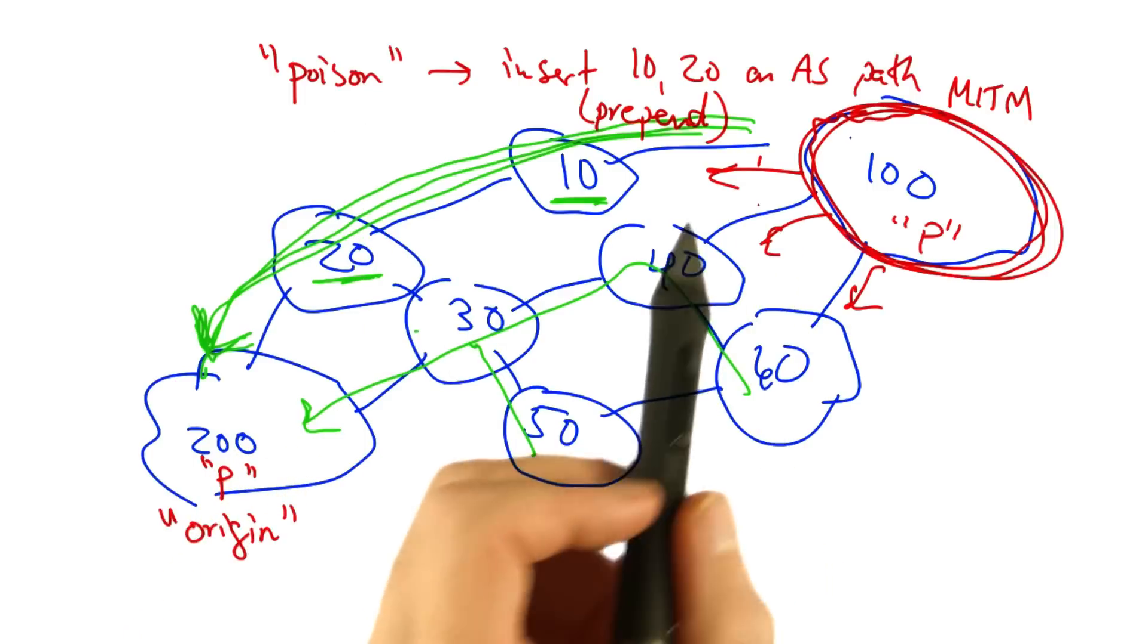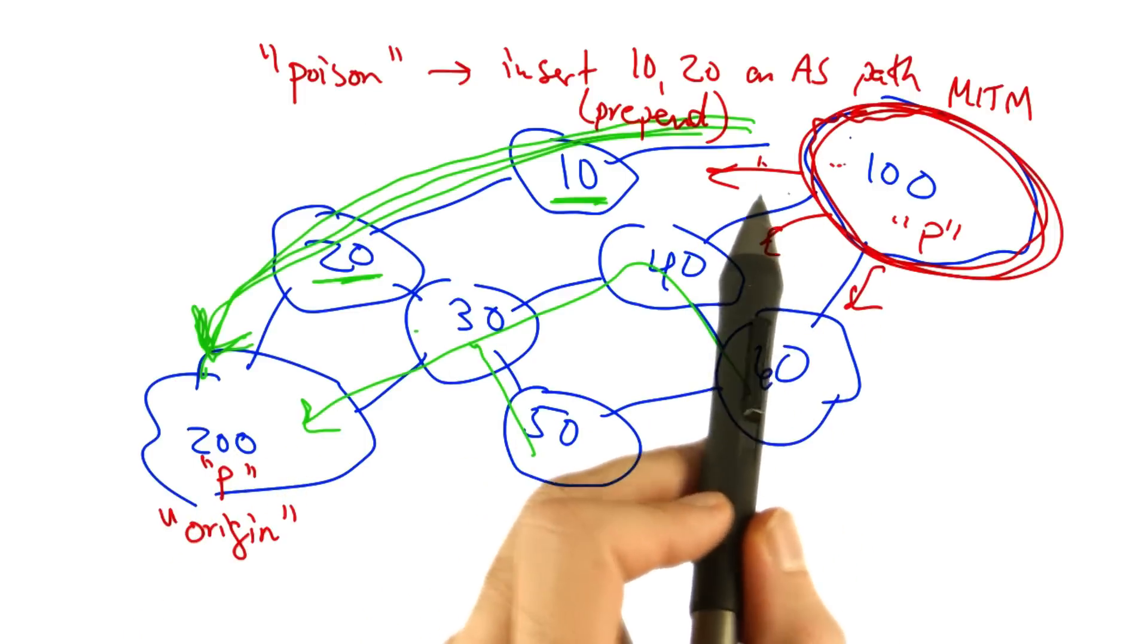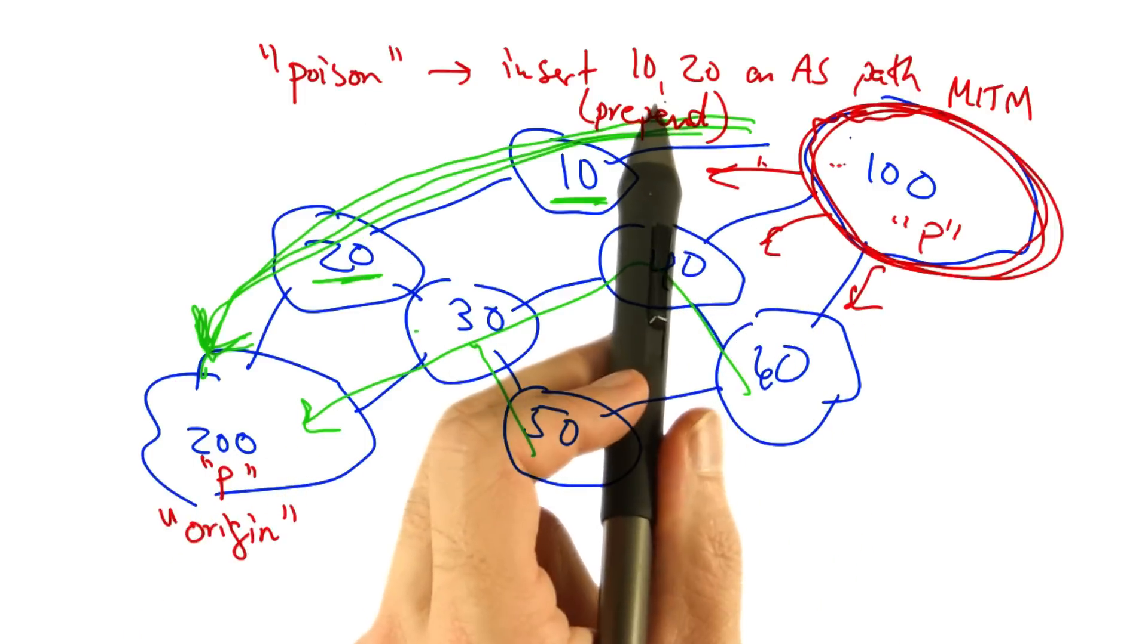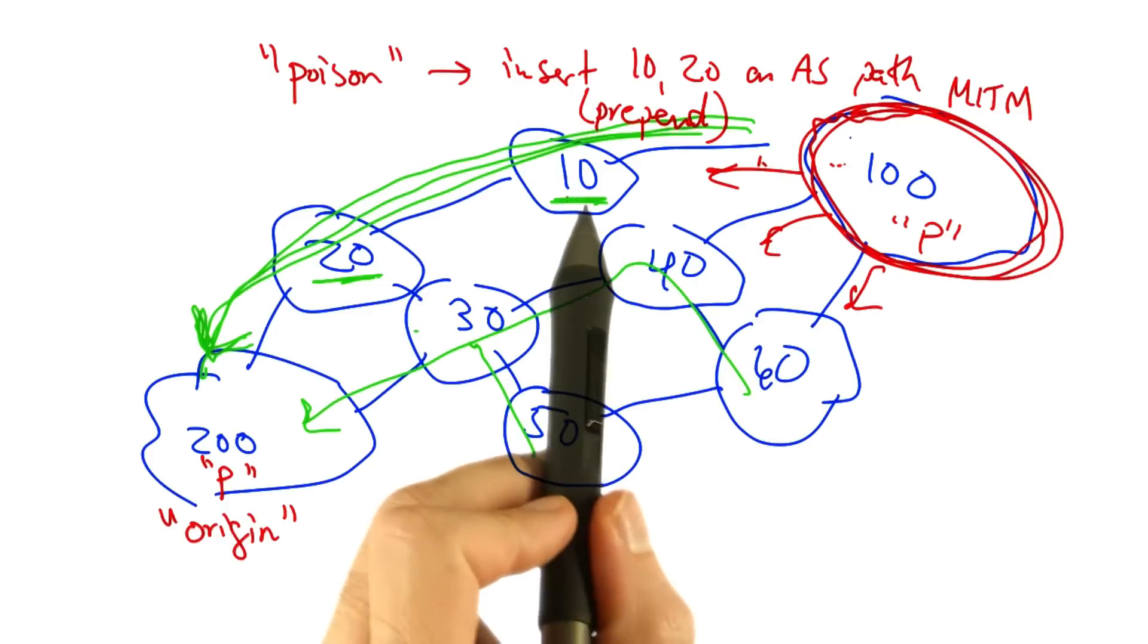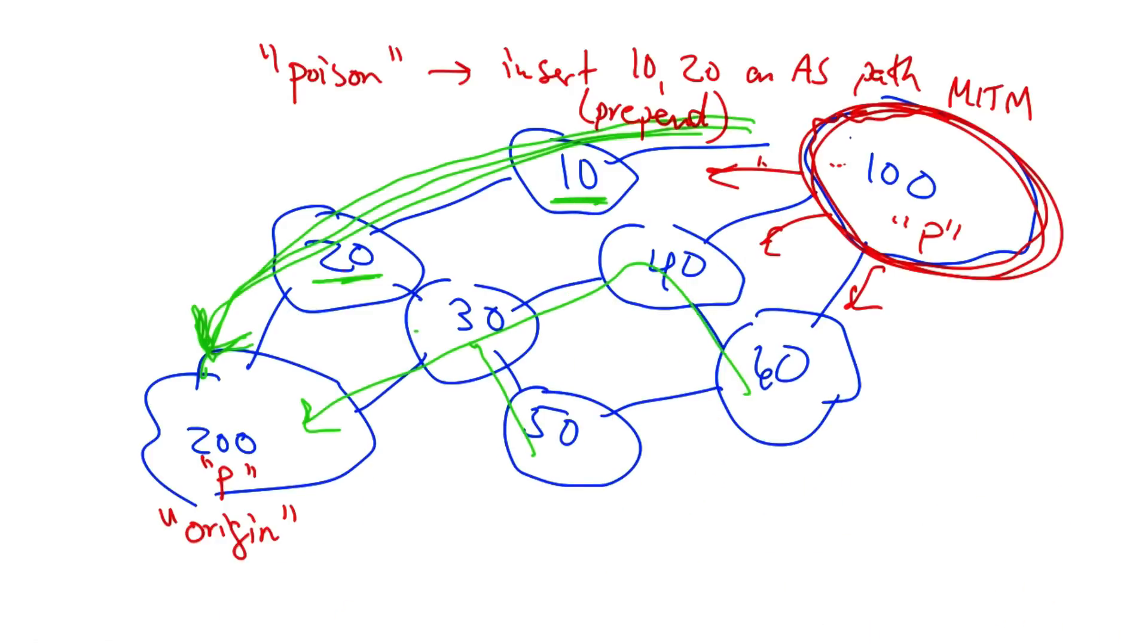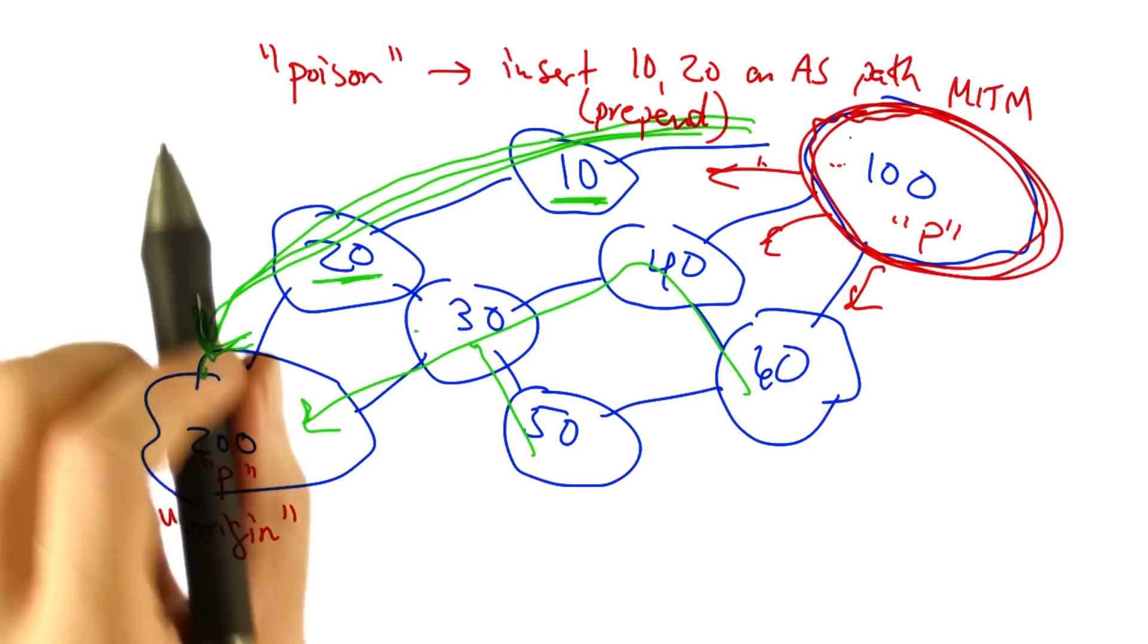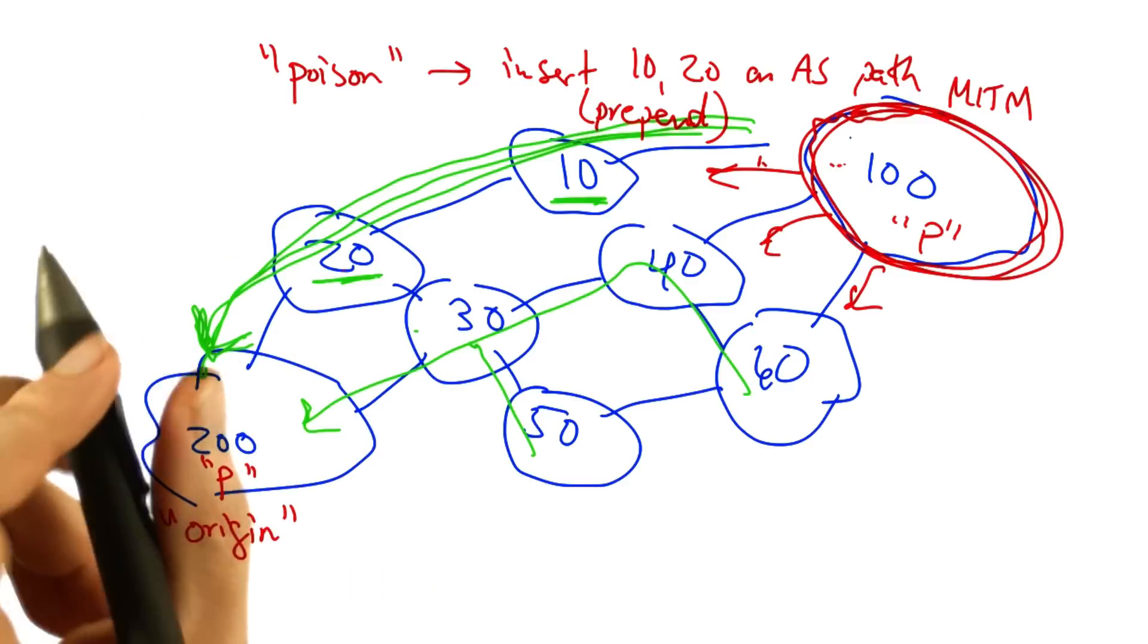So if AS100 advertises a route that includes AS10 and AS20 in the AS path, both of these ASs will drop the announcement because they will think they've already heard the announcement and don't want to form a loop.